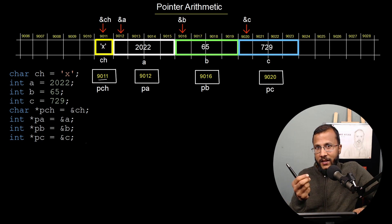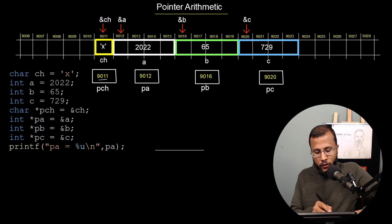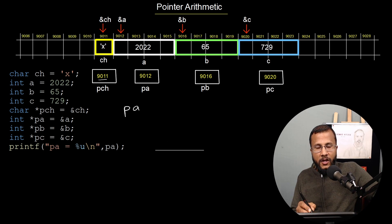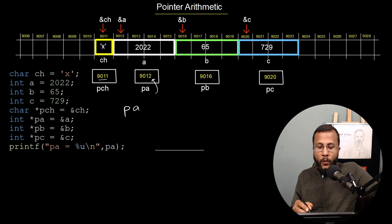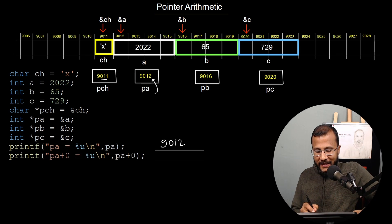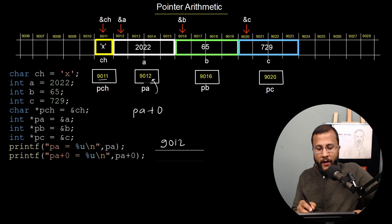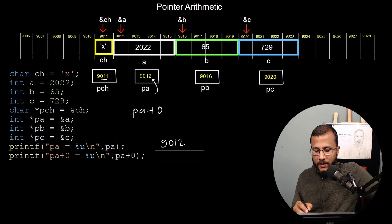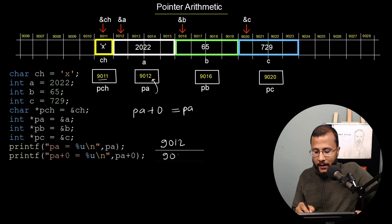Now let's try to see what is the output of the following printf statements. The first printf statement is printing pa. pa is the name of the variable, so you go into that variable and see what is the content, which is 9012 — the address of a. So pa is going to display 9012. Now let's look at pa plus 0: I know pa is 9012, and if I add 0 to 9012 I am not making any changes to pa. So it is going to display 9012 in the output.